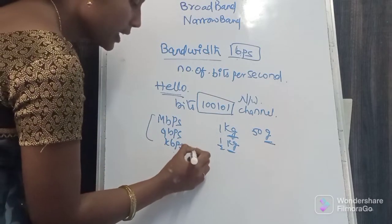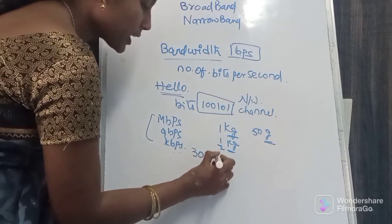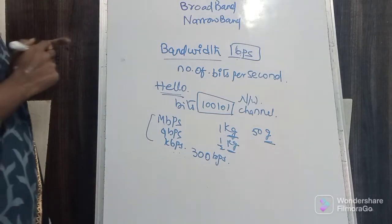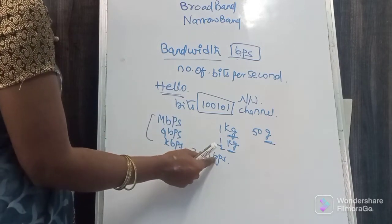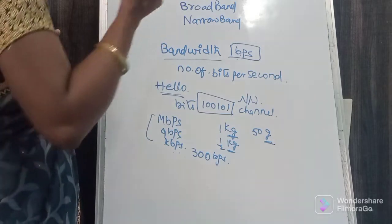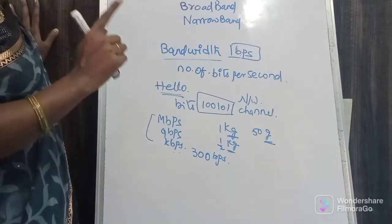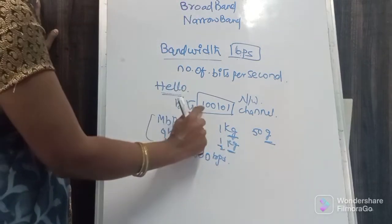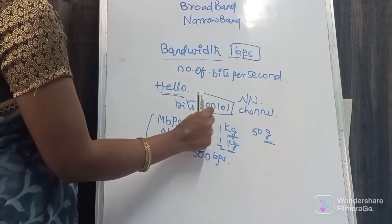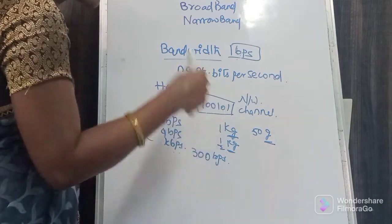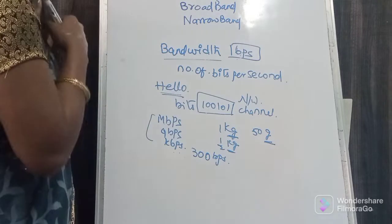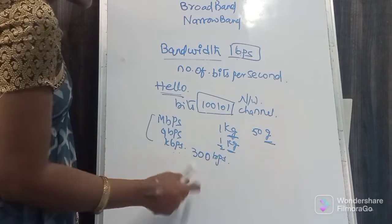For example, if my mobile has a capacity of 300 BPS, that means 300 bits per second. That means for 1 second, it can transfer 300 bits. So in each second, 300 bits are sent to the receiver.